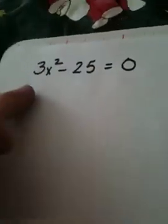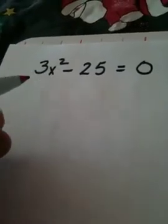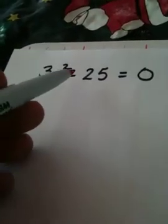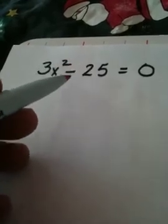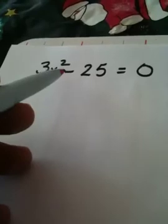Alright, if I'm asked to solve this using the square root property, part of the reason I would even think of doing that is whenever you have no middle term. Whenever you don't see an x, like you see the beginning, you see the end, but you don't see the middle, the square root property is a great way to do it.